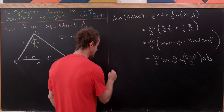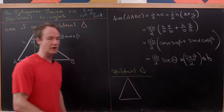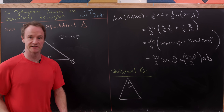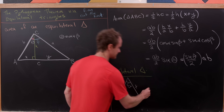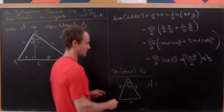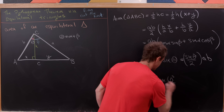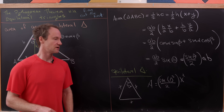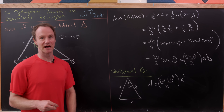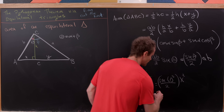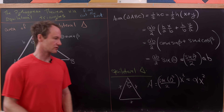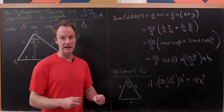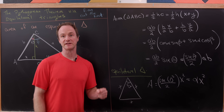Now let's apply that to an equilateral triangle. All angles are 60 degrees, and all sides are x, so the area is (sine 60° over 2) times x squared. Rather than compute sine 60°, I'll just call that coefficient some constant alpha. So the area of an equilateral triangle equals some constant times the side length squared — and that's all we need for our proof.